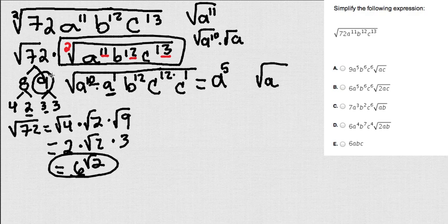Now let's do 12. 12 divided by 2 is 6. So this is actually 6. And I'm gonna do the same with c. 12 divided by 2 is actually c 6 as well. Now, there's another c here that I cannot get out.